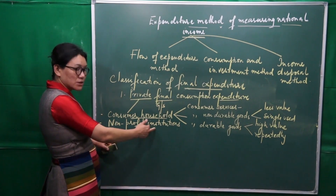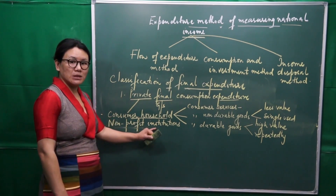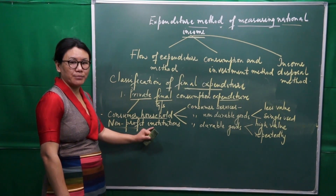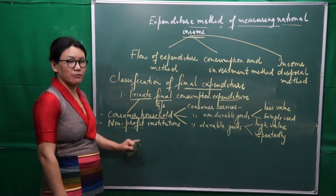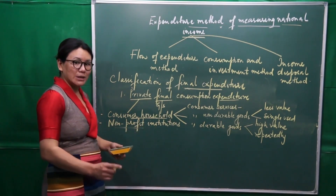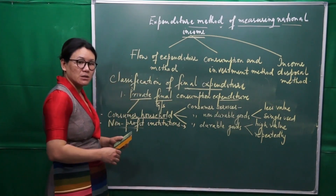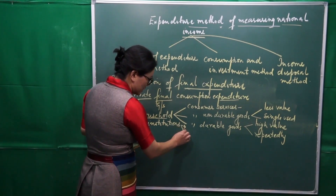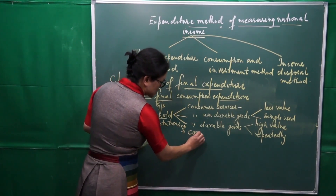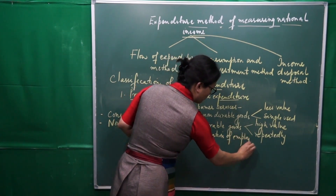The second type under Private Final Consumption Expenditure is non-profit institutions. Non-profit here means institutions that are meant for serving the society, not with the view of earning profit. Such institutions are called non-profit institutions. They also incur expenditure — they purchase final goods and services for the sake of serving the society. Their expenditure also includes compensation of employees.